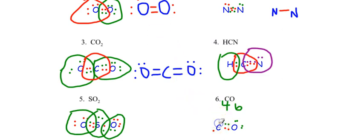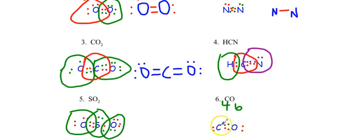Carbon is not stable with fewer than eight electrons — it needs to share to achieve that. The only way to fix it is by moving electrons already present into the middle as a shared bond. After doing that correctly, carbon has eight, oxygen has eight, and the total electron count is 10 — exactly right. For CO₂ the total is 18 electrons: four plus six times two, and counting confirms all 18 are present.